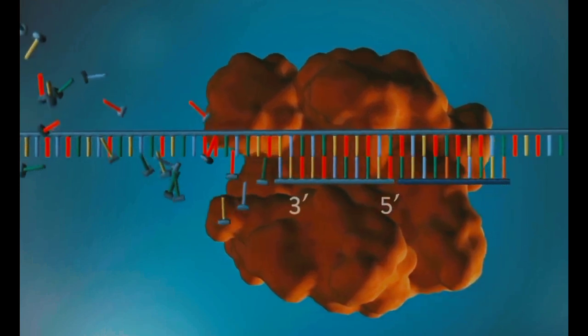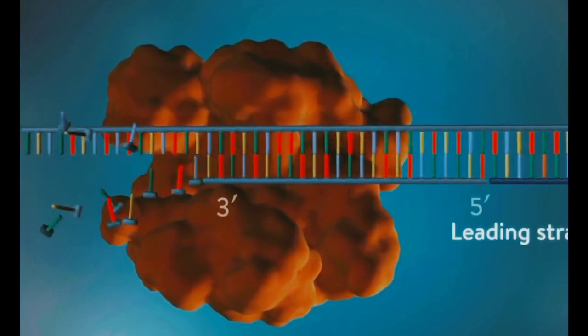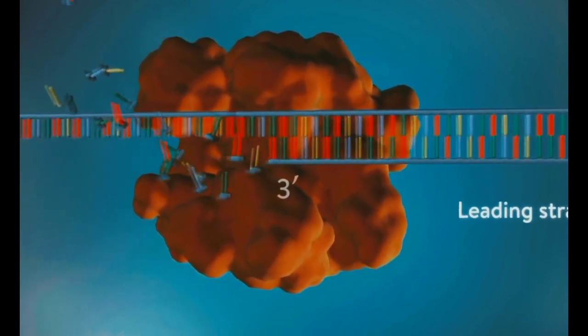One of the new strands of DNA, the leading strand, is made continuously, the DNA polymerase adding bases one by one in the 5' to 3' direction.